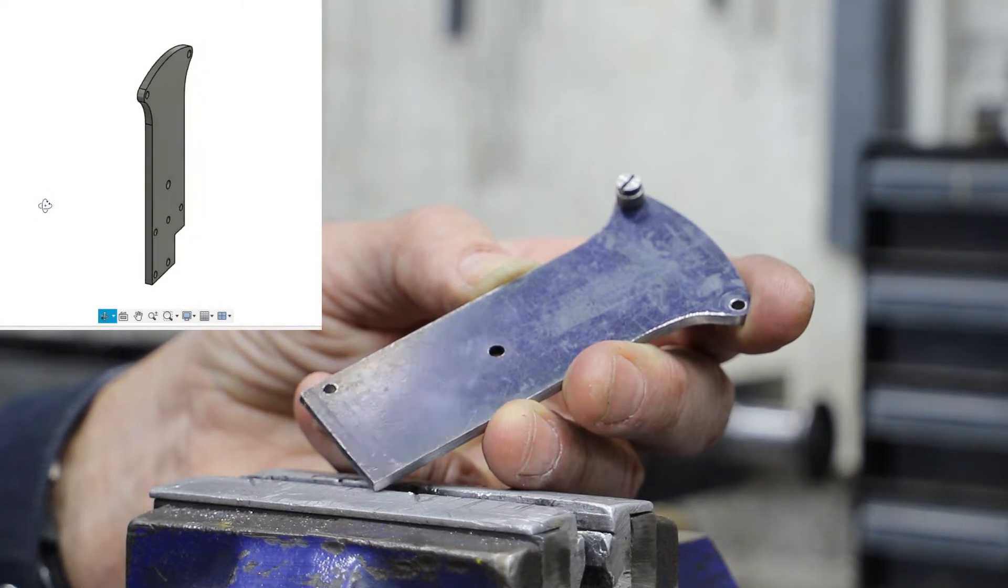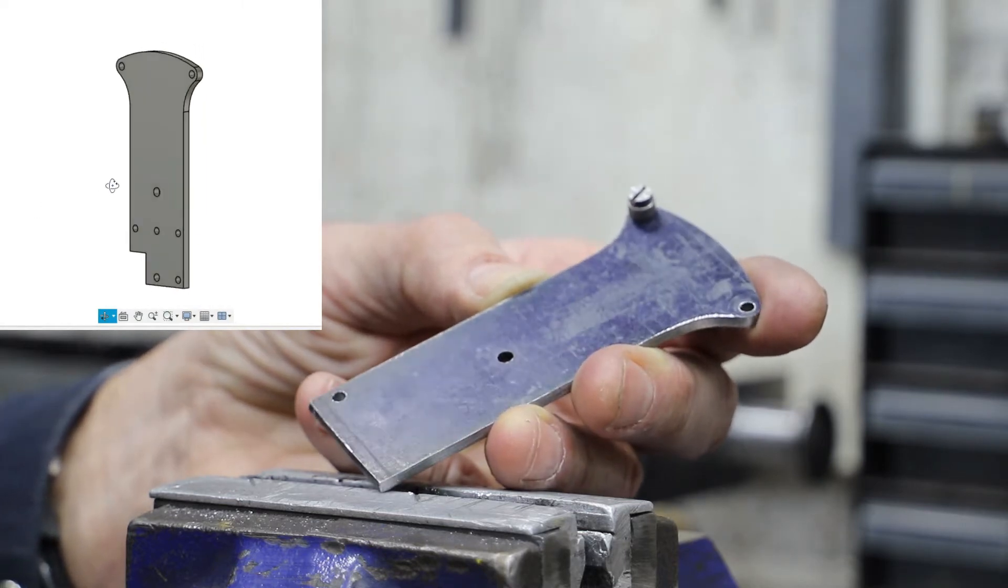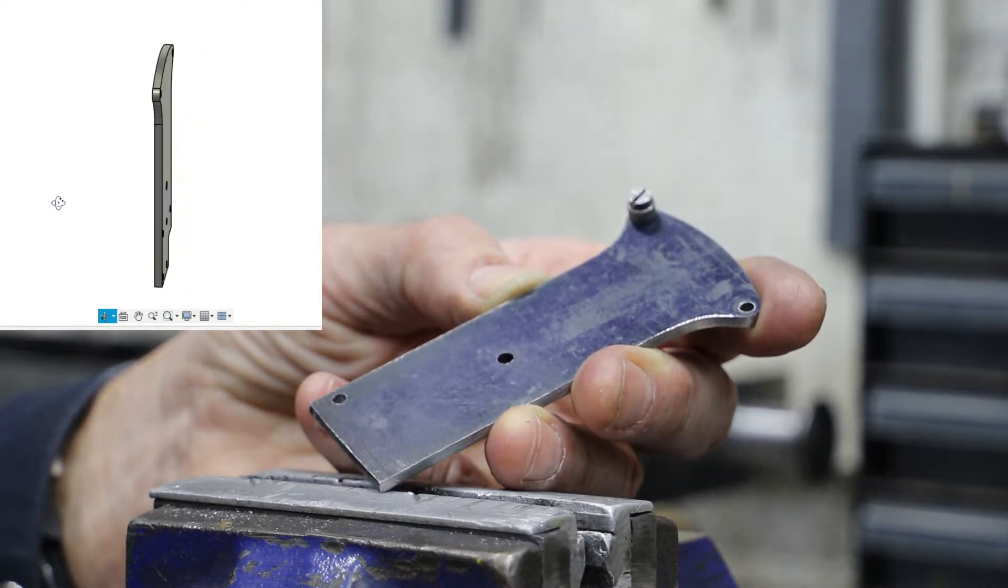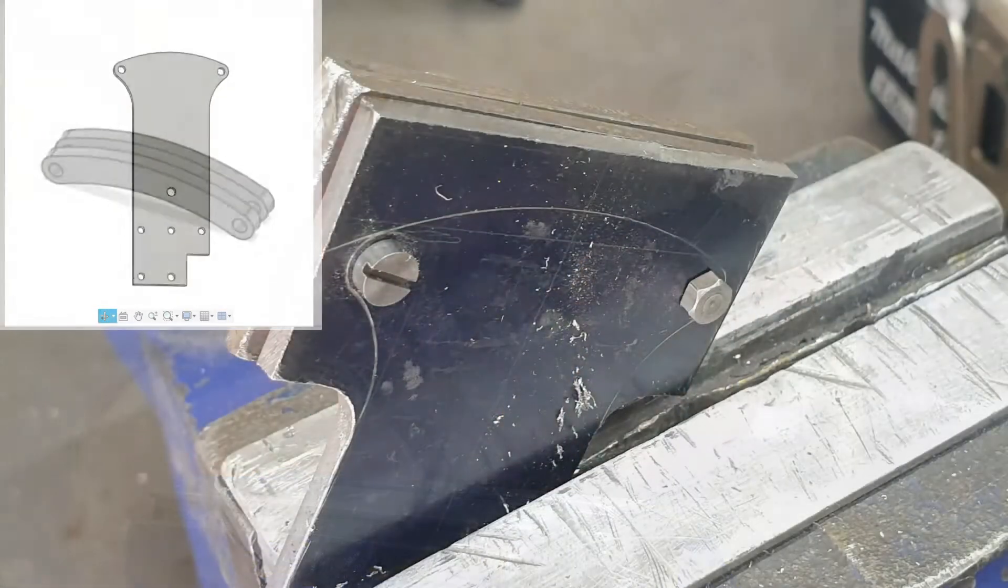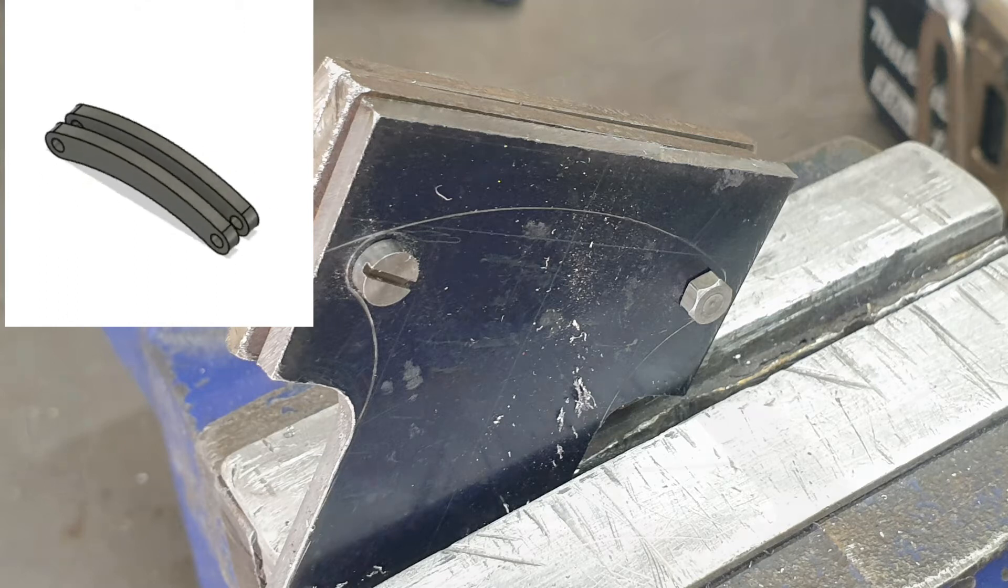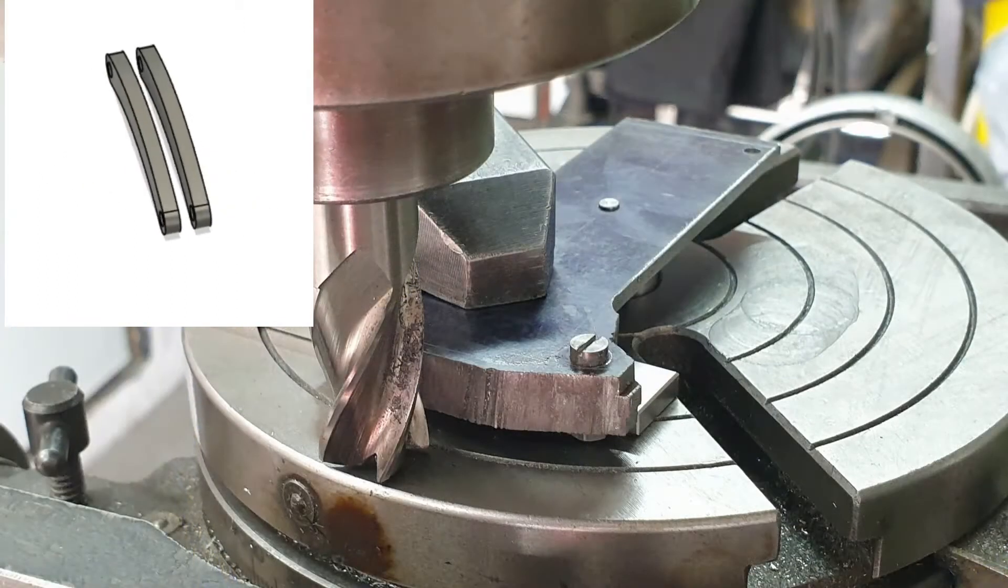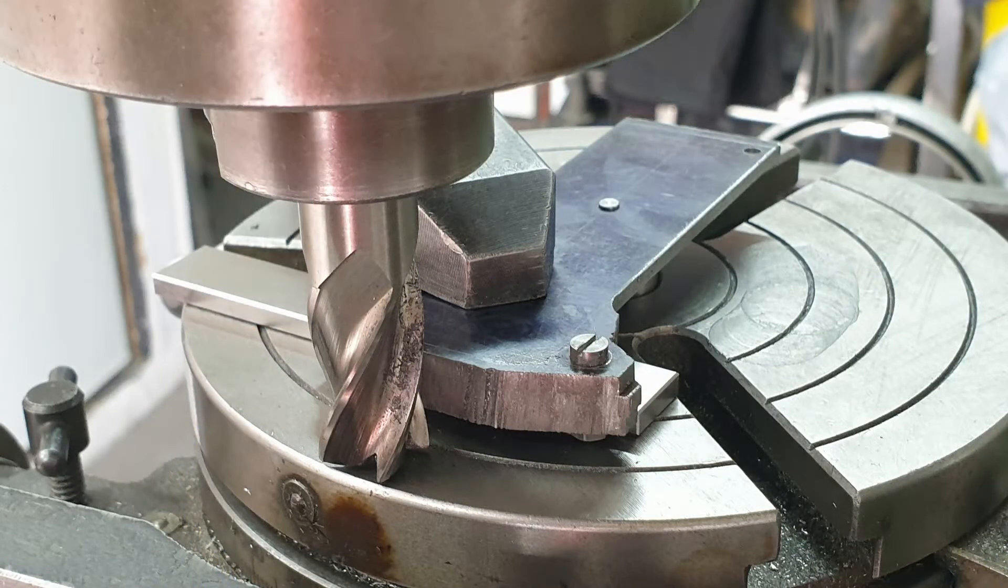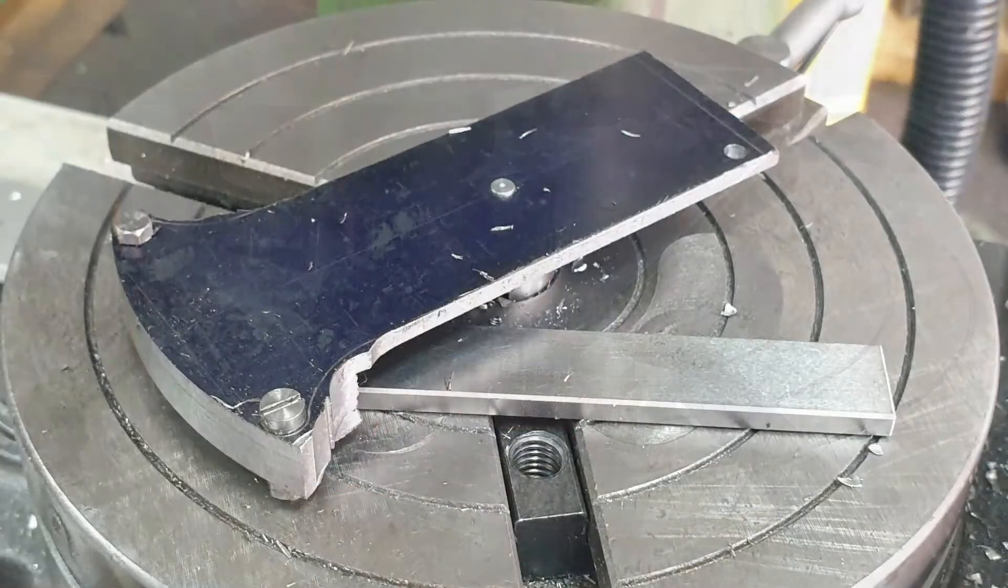The stand was primarily an exercise with the hacksaw and some files, although I did use an end mill and the rotary table to cut the radius across the top. As the two parts of the rack are the same radius I did all three together, and then realized I needed to cut another bracket which will also be cut up for spacers. But we'll come back to that one in a minute.